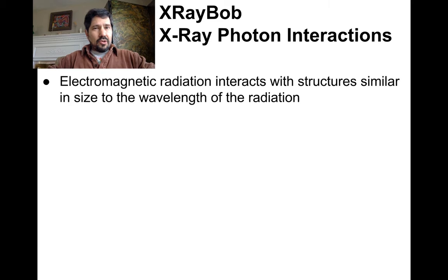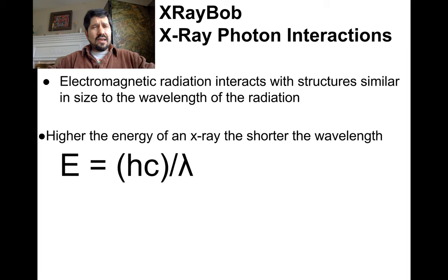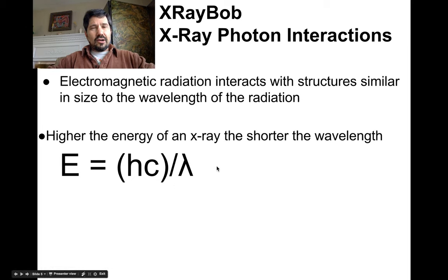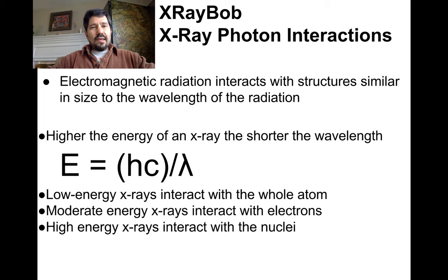Let's start with a brief review. Electromagnetic radiation is mainly going to interact with structures that are similar in size to the wavelength of the radiation. As the energy goes up, the wavelength goes down. As energy goes up, frequency goes up. We've got Planck's equation here. Higher the energy, the shorter the wavelength. Low energy x-rays interact with the whole atom, moderate energy x-rays interact with the electrons, and high energy stuff will interact directly with the nuclear force or the nucleus itself.